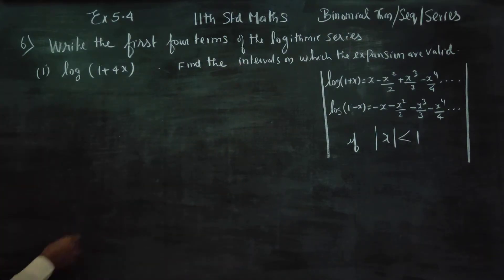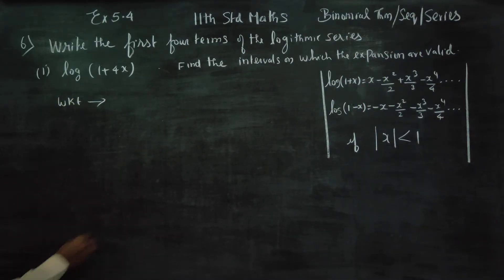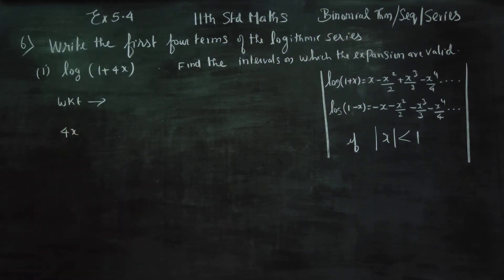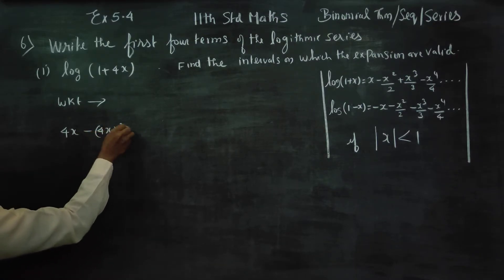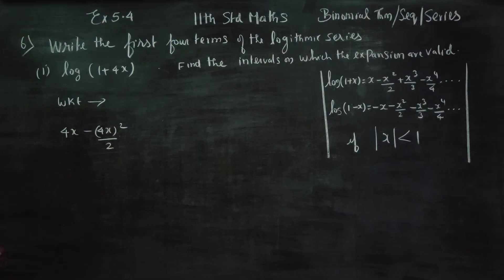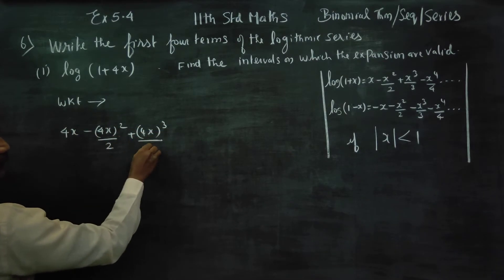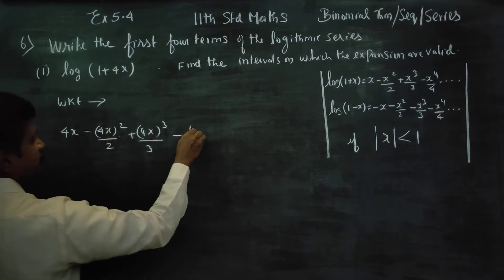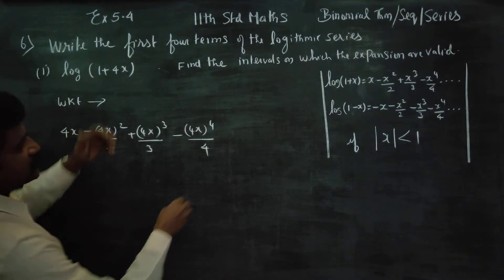We will start expanding log(1 + 4x) using the first formula. We know that substituting x with 4x gives: first term is 4x, then minus (4x)² by 2, then plus (4x)³ by 3, then minus (4x)⁴ by 4, and it goes on. We now have four terms.